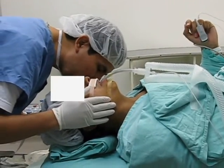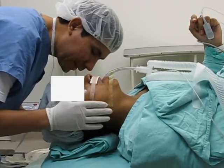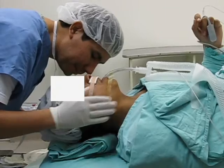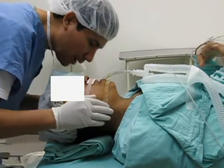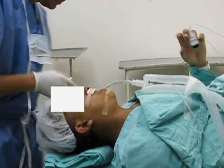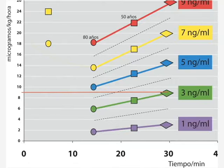Awakening is an event that, like induction, requires specific conditions so the patient will awaken relaxed, without cough, and without hemodynamic alterations. At the moment of extubation, the patient must be without the hypnotic effect — that is, awake — but able to tolerate extubation. At this point, the concentration of the hypnotic must be as close to zero as possible, and the opioid at a concentration that allows safe extubation.